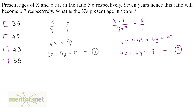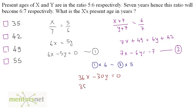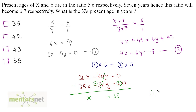From the second condition we get 7X plus 49 is equal to 6Y plus 42, so 7X minus 6Y is equal to minus 7 — let us name this equation 2. These are simultaneous equations. To eliminate Y, multiply equation 1 by 6 to get 36X minus 30Y equals 0, and equation 2 by 5 to get 35X minus 30Y equals minus 35. Subtracting, 36X minus 35X gives X is equal to 35. Therefore X's present age is 35 years.